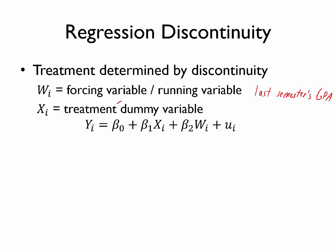X is a treatment dummy variable, equal to 1 or 0. 1 if on academic probation, which is the treatment, 0 otherwise. We can determine the value of x based on last semester's GPA, based on the forcing variable. It is equal to 1 if W is less than that 2.0 threshold or 0 if W is greater than or equal to that 2.0 threshold.